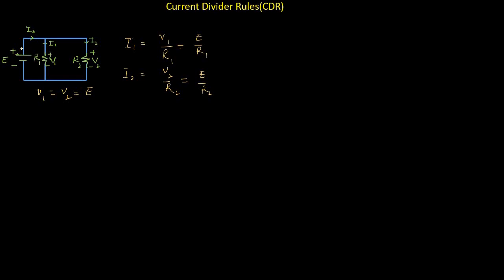For these cases it is simple to find the current through R1 and R2 because the input voltage is already known. However, there are some cases in which the input voltage is not given for a parallel circuit. In order to avoid finding the total input voltage to the parallel circuit, we can use the current divider rule, which allows us to find currents without needing the total input voltage.